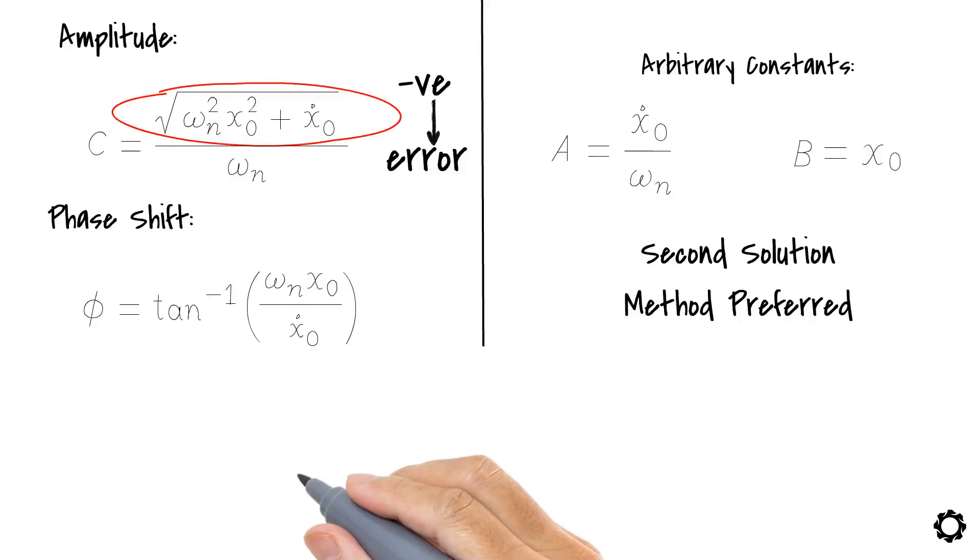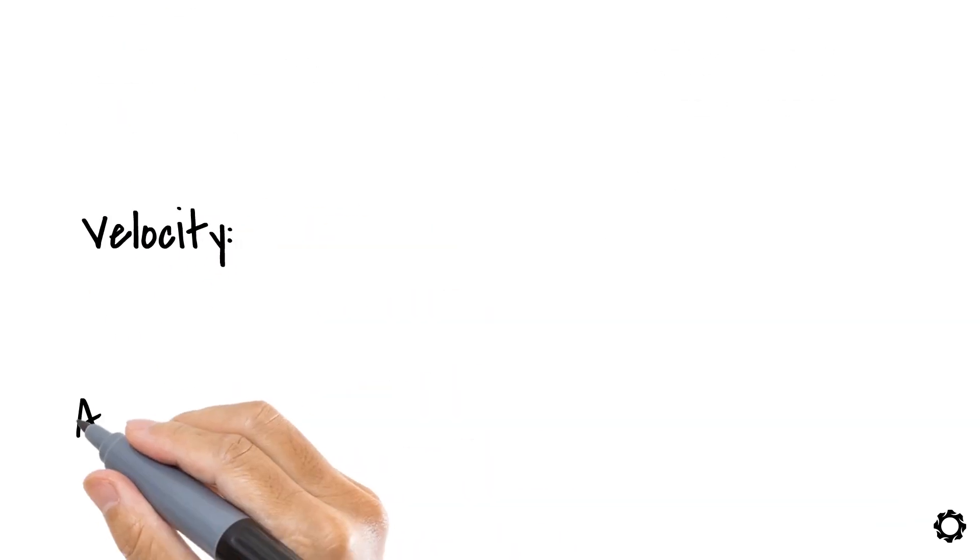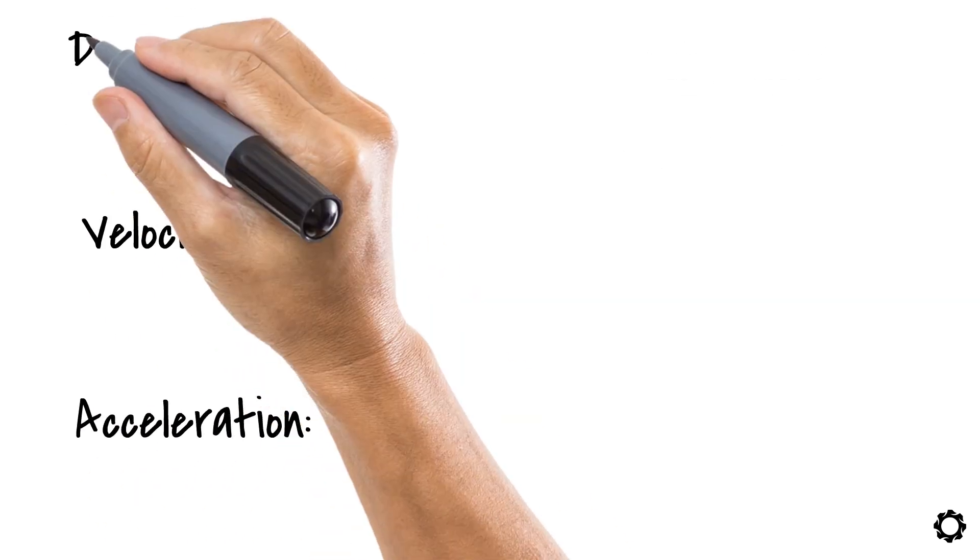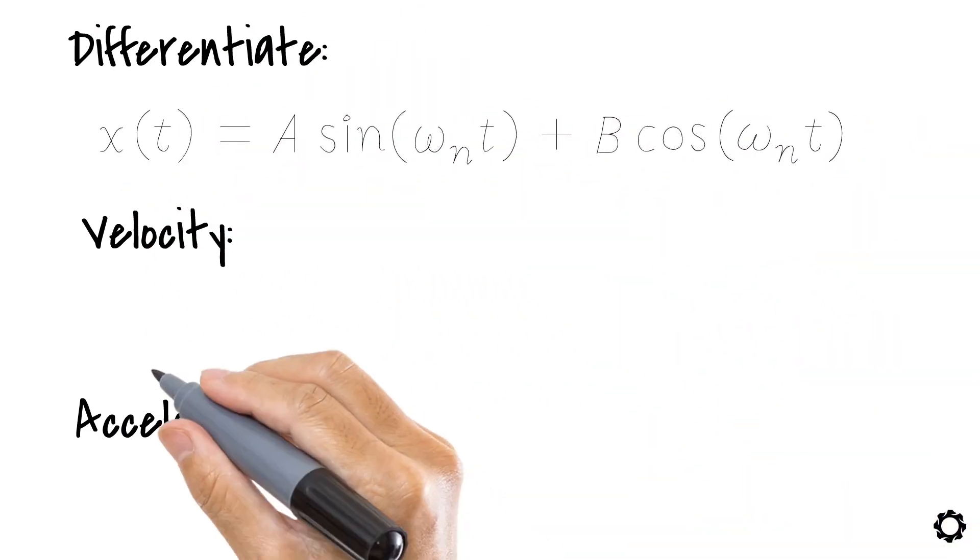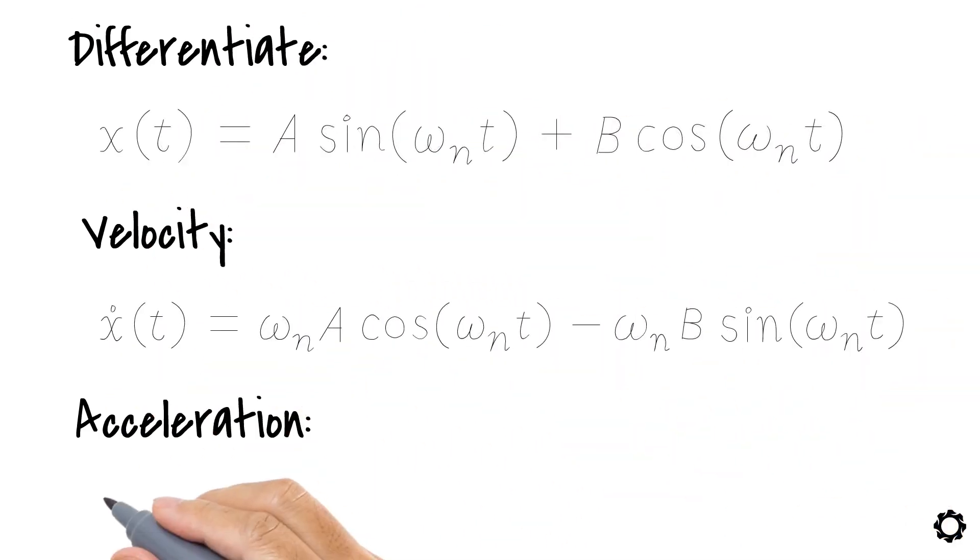Note that if we want to also know the velocity or acceleration of the mass, we just need to differentiate the function xt once or twice with respect to time. This is simple, isn't it?